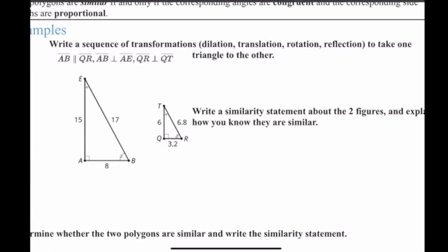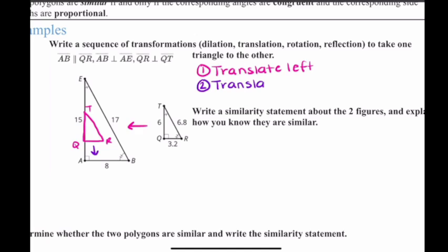Here I can write a sequence of transformations that'll take triangle QRT onto ABE. First, I'm going to translate it to the left. The triangle ends up somewhere around here — this is QRT after going left. From there, I can either translate it up or down; I'm going to translate it down, and it would have the same effect either way.